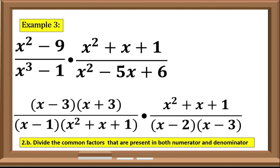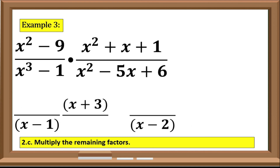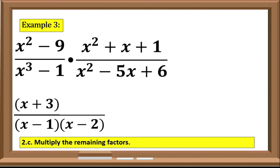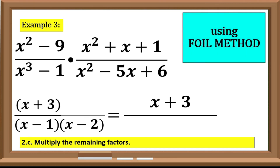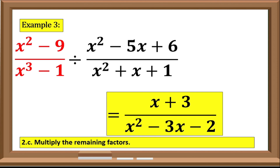Next, divide the common factors that are present in both numerator and denominator — in this case we have (x - 3) and (x² + x + 1). The last step: multiply the remaining factors. In the numerator we have (x + 3), and for the denominator we use the FOIL method to solve the product of (x - 1)(x - 2), which gives x² - 3x + 2. Therefore, the quotient is (x + 3) over (x² - 3x + 2).